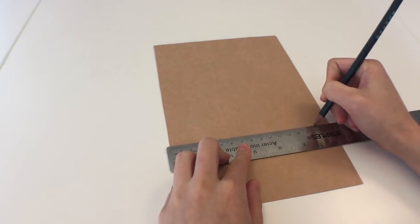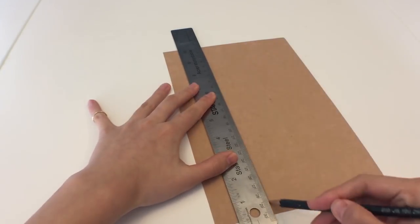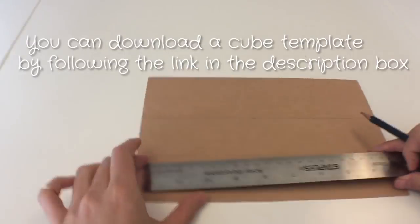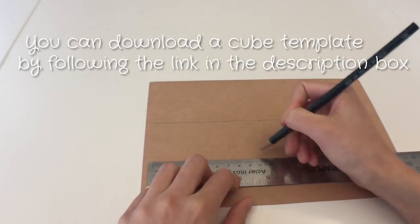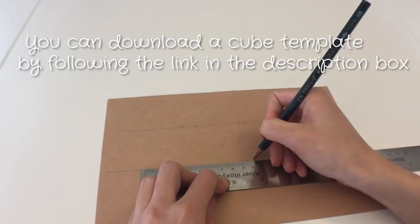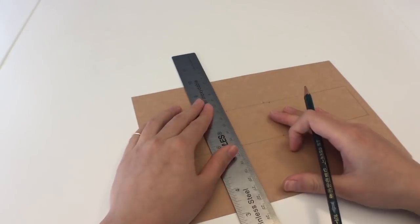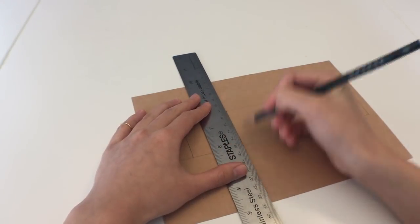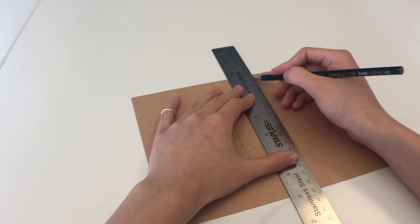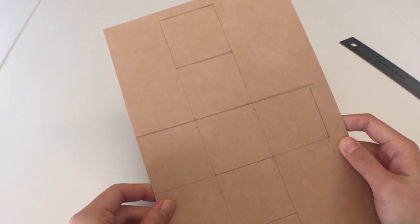To start off, I'm going to be making the template for the little square box. It's quite easy. You basically want four squares vertically, and then three squares horizontally. If it helps, you can definitely check out the web to get a good idea of how to build a cube.